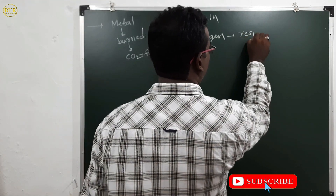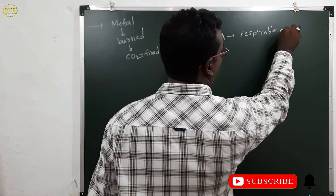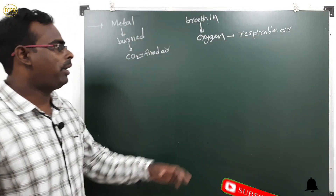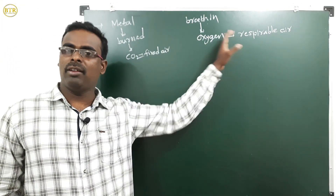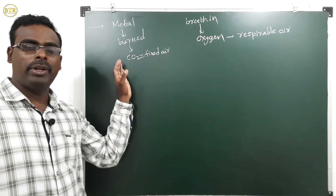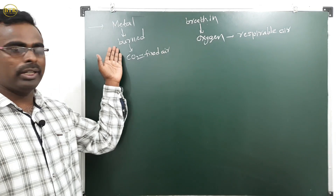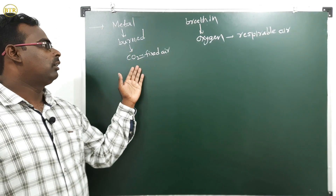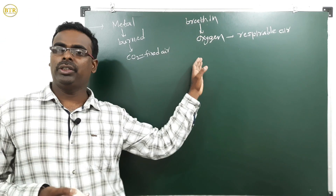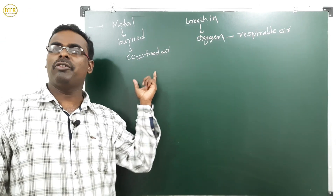Respirable air or respirable gas means oxygen gas, and fixed air means carbon dioxide gas. When a metal is combusted, fixed air is released. When we breathe in, we take in respirable air — oxygen — into our body.